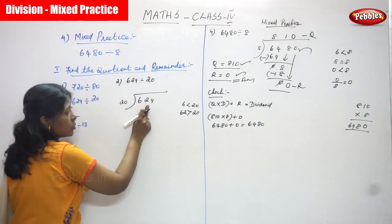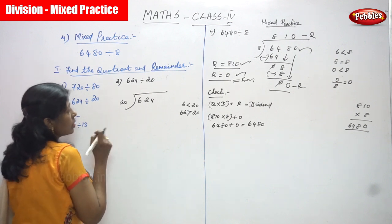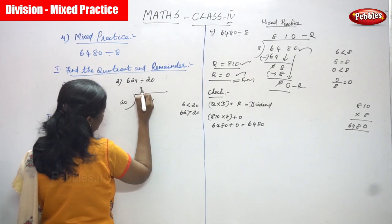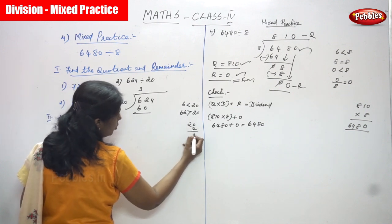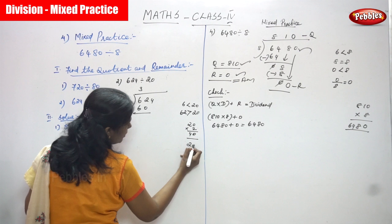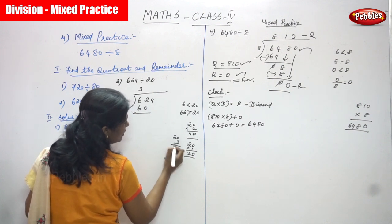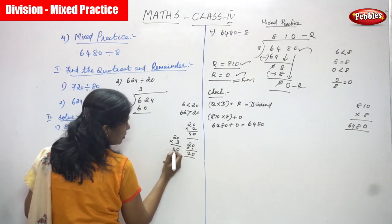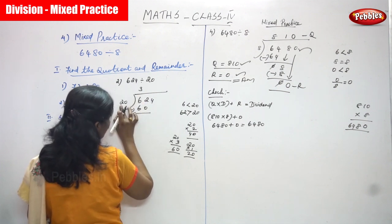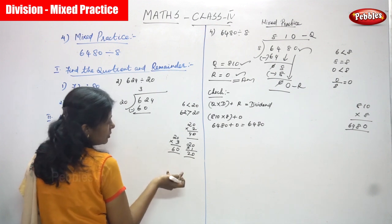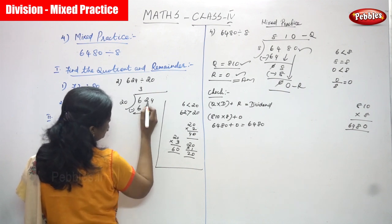In 62, how many times does 20 go? 1 into 20 is 20, 2 into 20 is 40, 3 into 20 is 60 — so 3 times it goes. If you don't know the 20 times table, you can multiply: 3 into 0 is 0, and 3 twos are 6, giving 60. So in 62, 20 goes 3 times. Then 62 minus 60: 2 minus 0 gives 2.